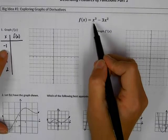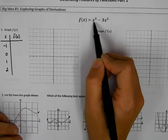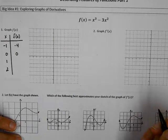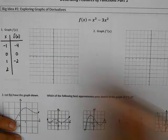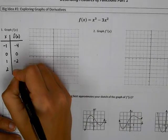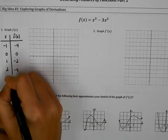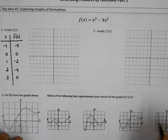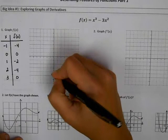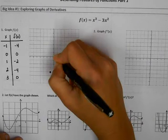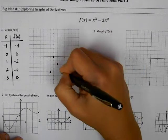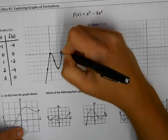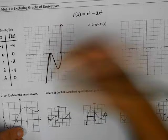To figure out the y-values, I take each x and plug it into the equation. When I plug in -1, I get -1 - 3 = -4. When I plug in 0, I get 0. When I plug in 1, I get -2. When I plug in 2, I get 8 - 12 = -4. And when I plug in 3, I get 27 - 27 = 0. Graphing those points gives us a cubic function.